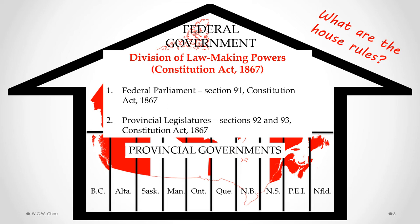The division of powers rules are found in the Constitution Act 1867. There are specific sections with a list of powers allocated to the federal parliament and a different list of powers allocated to the provincial legislatures. We'll talk more in depth about the division of law-making powers in the next video.